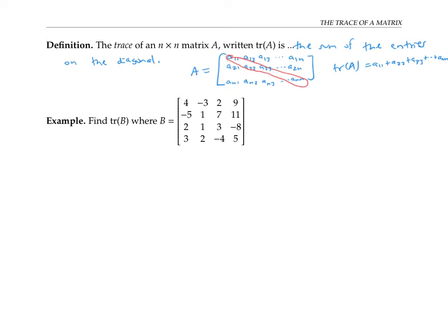But it's easier to talk about the trace in a specific example. For this four by four matrix B, the trace is what we get by adding up the four numbers on the diagonal: four plus one plus three plus five, and these add up to 13.